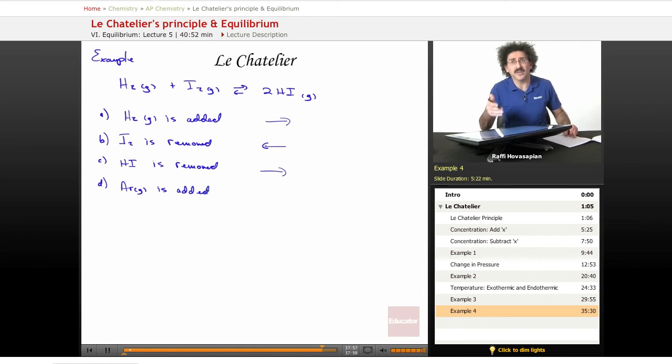If you're adding an inert gas, you're changing the total pressure of the system, but there's not really much that you can do. In this case, nothing happens. No change.